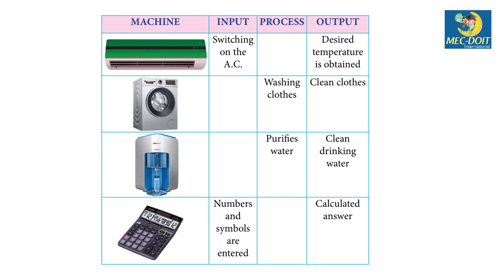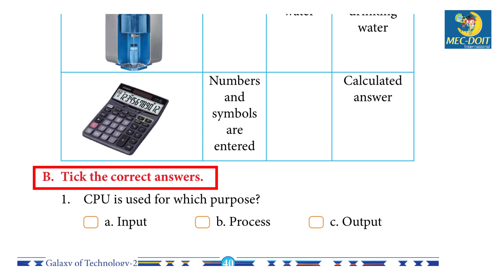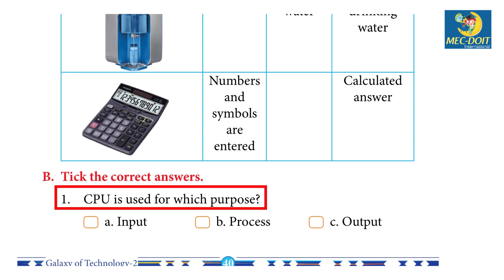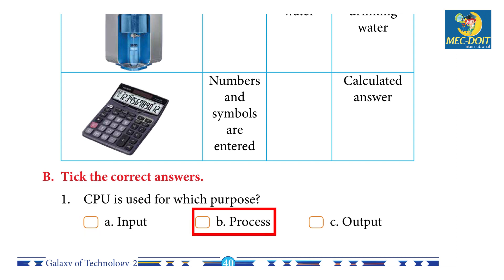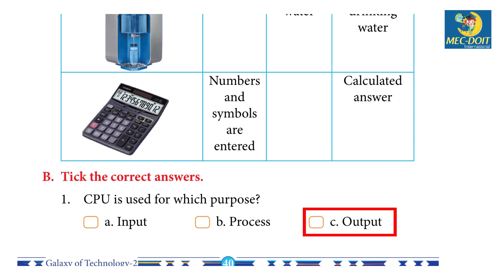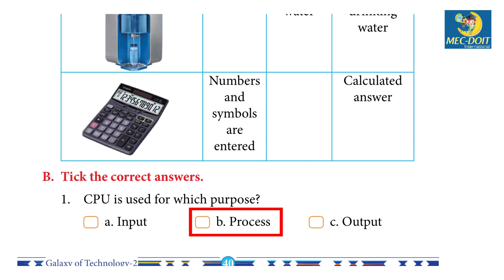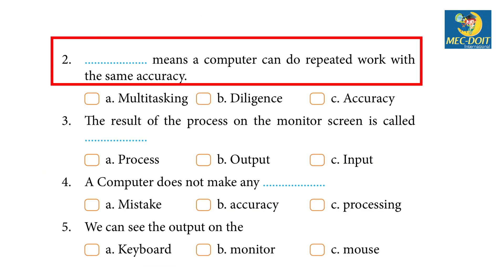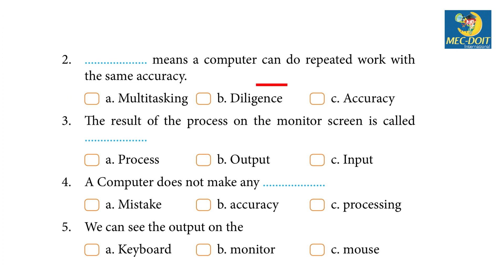Upskill your intelligence. Take the correct answers. One: CPU is used for which purpose? A) Input, B) Process, C) Output. Answer: B — Process. Two: Dash means a computer can do repeated work with the same accuracy. A) Multitasking, B) Diligence, C) Accuracy. Answer: C — Accuracy.